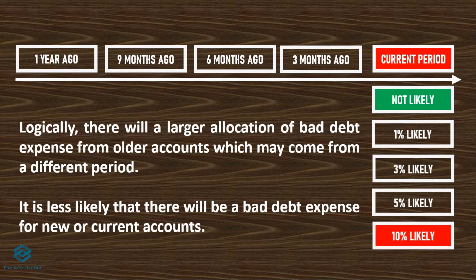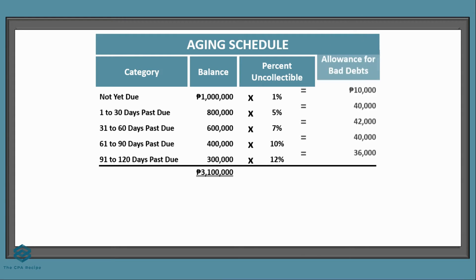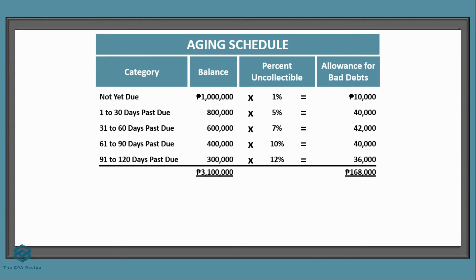Now, let's assume the company has available data and the percentages have been computed. For example, for accounts not yet due, based on past experience, 1% is uncollectible; for 1 to 30 days past due, 5%, and so on. You multiply these rates to get the required allowance for bad debts — that should be the ending balance on the financial statements. But what if the allowance for bad debts already has an initial balance? For illustration purposes, let's assume it's 100,000 pesos.